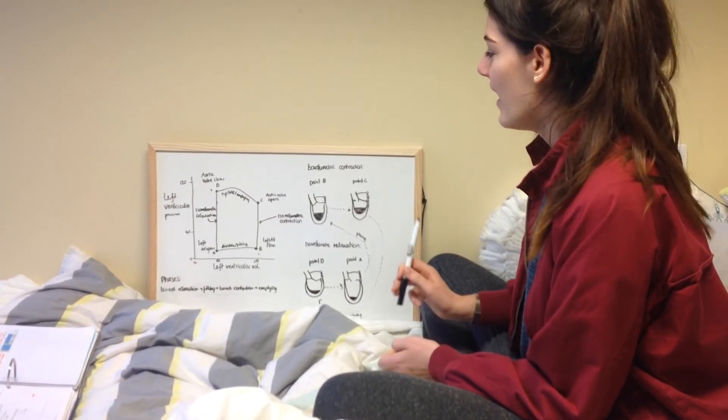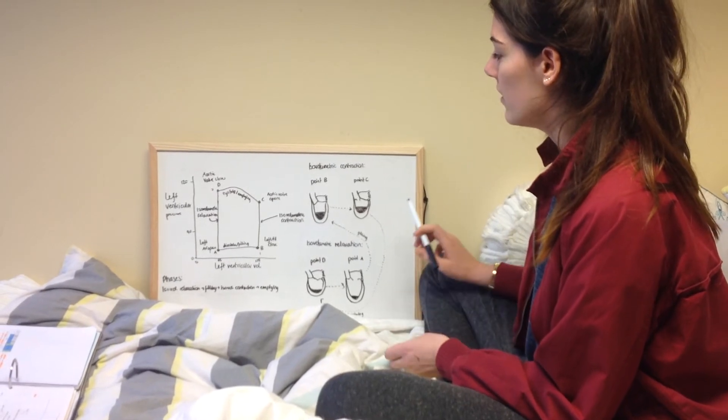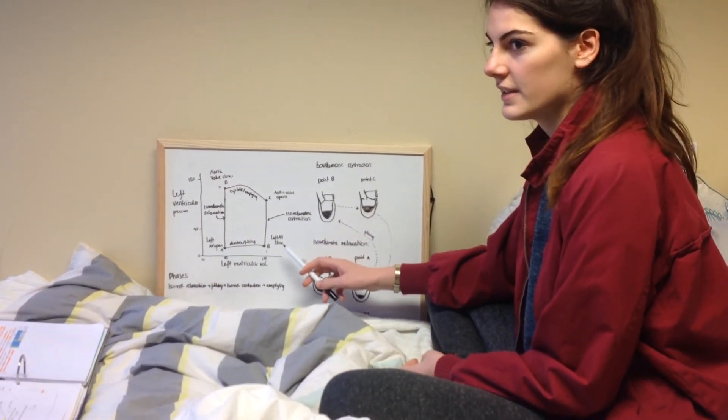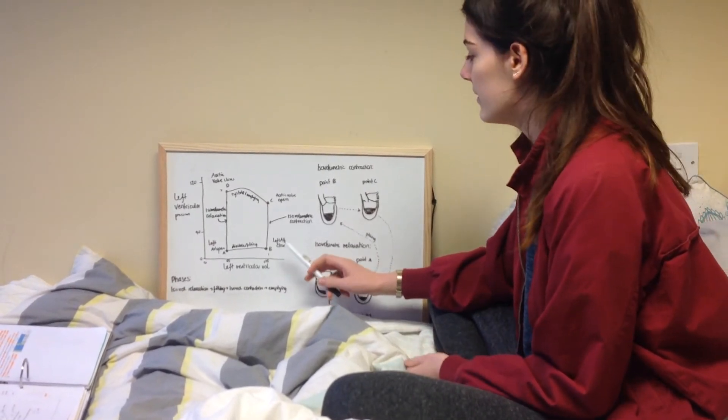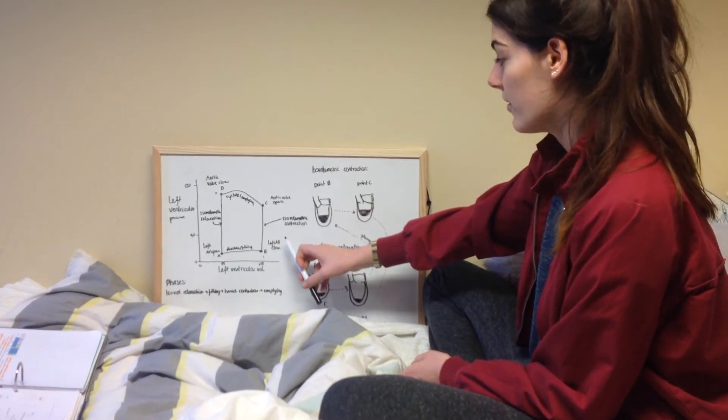What are the heart sounds? S1, which is the lub sound, will occur when the left AV valve closes and you get turbulence as the valve rebounds. That will be at the beginning of isovolumetric contraction.